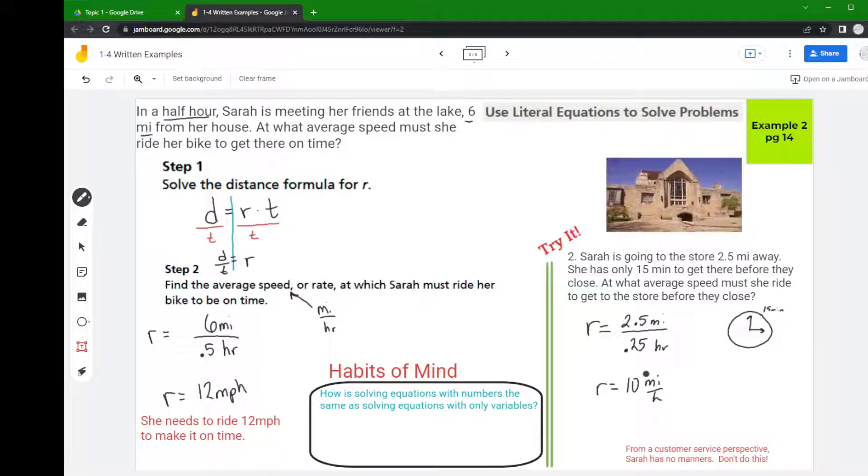All right, now this section does also include a habits of mind. It says how is solving equations with numbers the same as solving equations with only variables? They're trying to get you to think about how things are similar and to generate relationships.